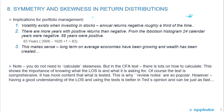With regards to the implications for portfolio management: volatility exists when we're investing in stocks. Annual returns are negative roughly one-third of the time, as we saw from the histograms. But there are more years with positive returns than negative. From the Ibbotson histogram, 24 calendar years were negative and 59 years were positive — that was out of 83 years of data.